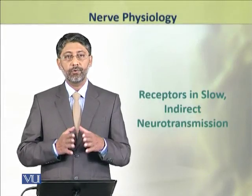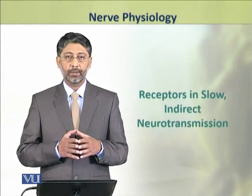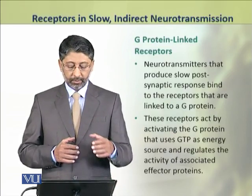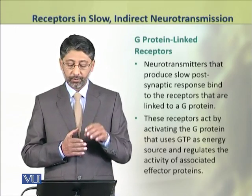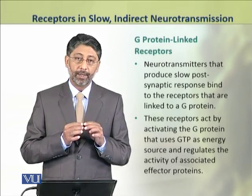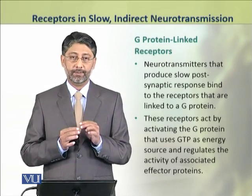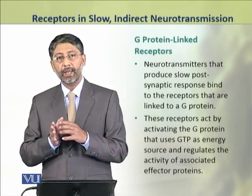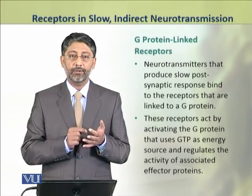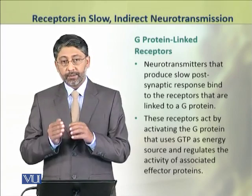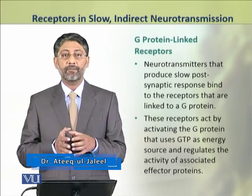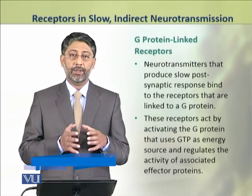Dear students, in this module we shall discuss the receptors involved in slow and indirect neurotransmission. The neurotransmitters that produce slow post-synaptic response bind to receptors linked to G proteins. These receptors act by activating the G protein that uses GTP as an energy source. This G protein is linked to effector proteins and results in a cascade of enzyme reactions within the cell that generates the response.